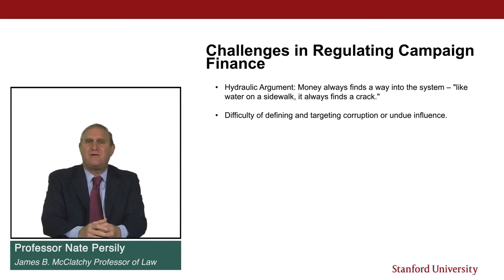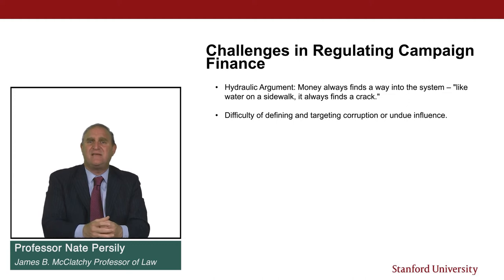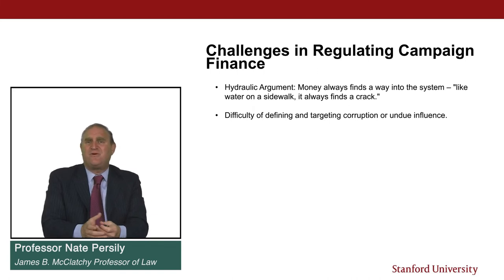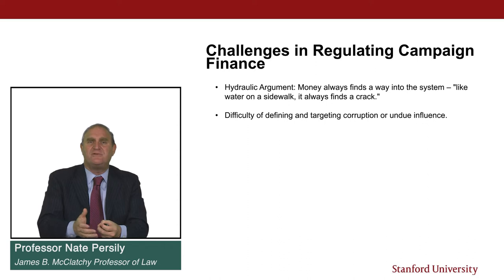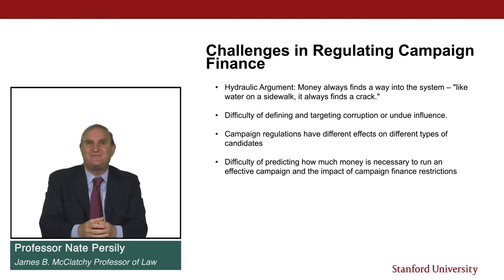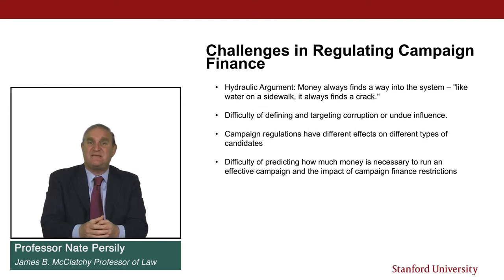Third, campaign regulations have different effects on different types of candidates. If you're a candidate with a lot of name recognition, or if you're an incumbent, you may not need to raise as much money as a challenger trying to get their name out. It is quite difficult to predict how much money is necessary to run an effective campaign. What contribution limits do is simply say that you have to raise less money from more contributors — if you have a $200 contribution limit and it takes $10,000 to run an effective campaign, you're going to need to gather at least 500 checks of $2,000. It's very hard to figure out exactly when those restrictions are so burdensome that it makes it difficult to run an effective campaign.